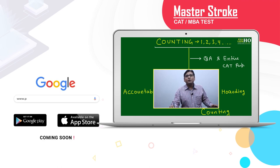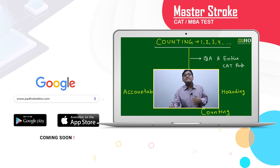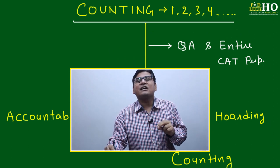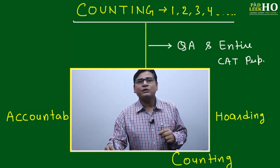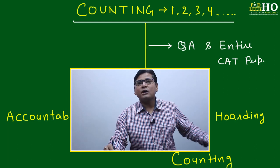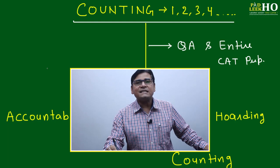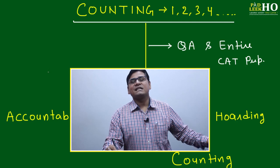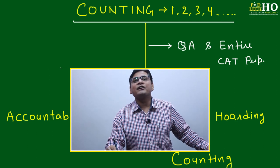Today we'll discuss one of the master strokes — one of the basic fundamental concepts of science and math — that is counting. How to count, and for what purpose. Counting is the starting point of math, or you can say from where math has originated. Before counting, math was not there. One, two, three, four — you can say it is a natural number.